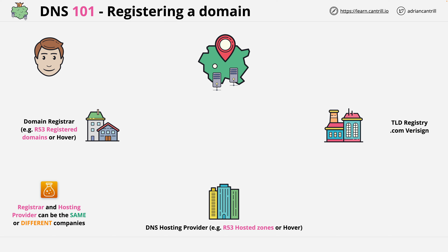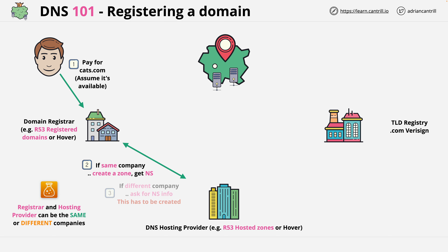Step number one in the domain registration process, assuming the domain is available, is that we pay for the domain via the domain registrar — examples include GoDaddy, Route 53, Hover, and many more. At this point, we're going to need a DNS zone for the domain being registered, and this zone needs to be hosted on some DNS name servers. If the DNS hosting provider is the same company as the registrar, a zone is created and hosted automatically. If it's a different company, you'll be asked for the name server information where the zone is already hosted, and this has to be configured separately. At this point, we have a domain being registered, a DNS zone ready to go hosted on some name servers, and all of the networking information for those name servers.